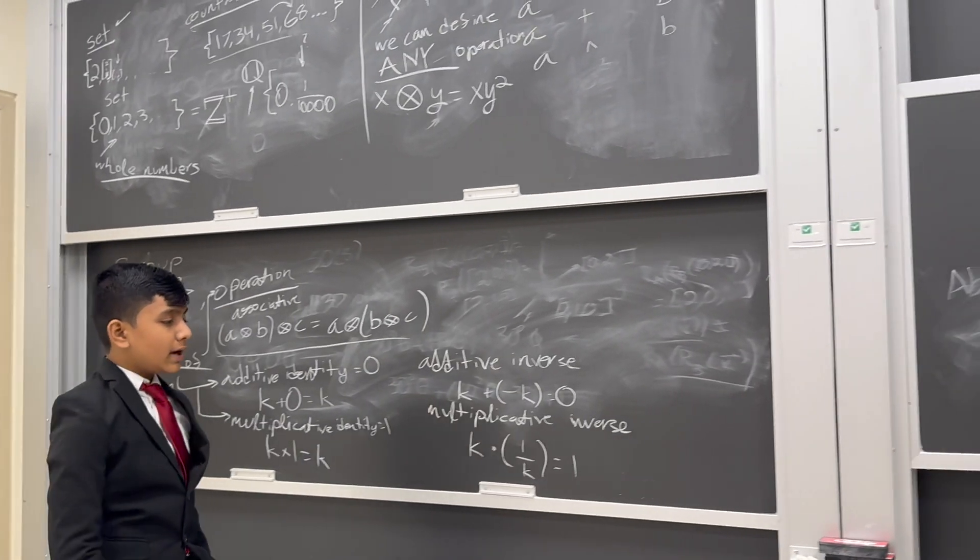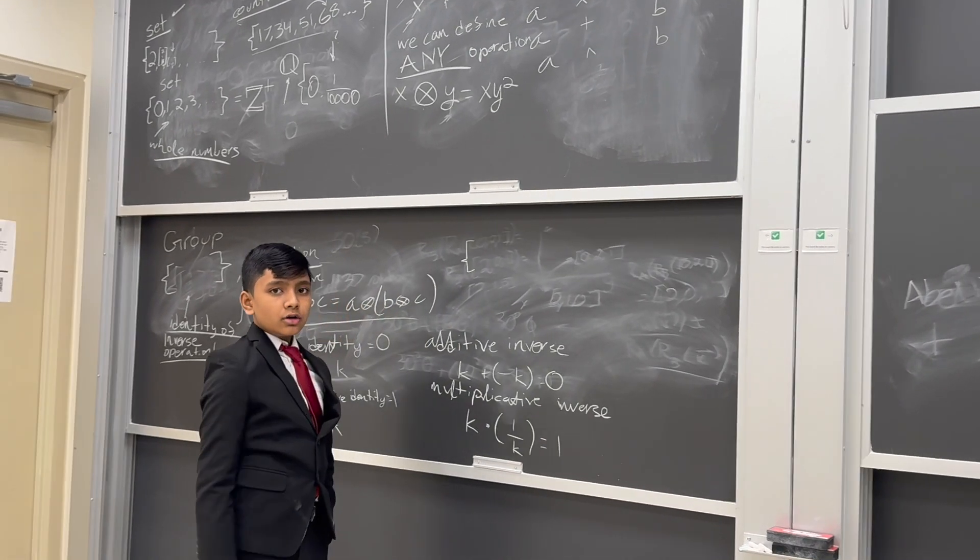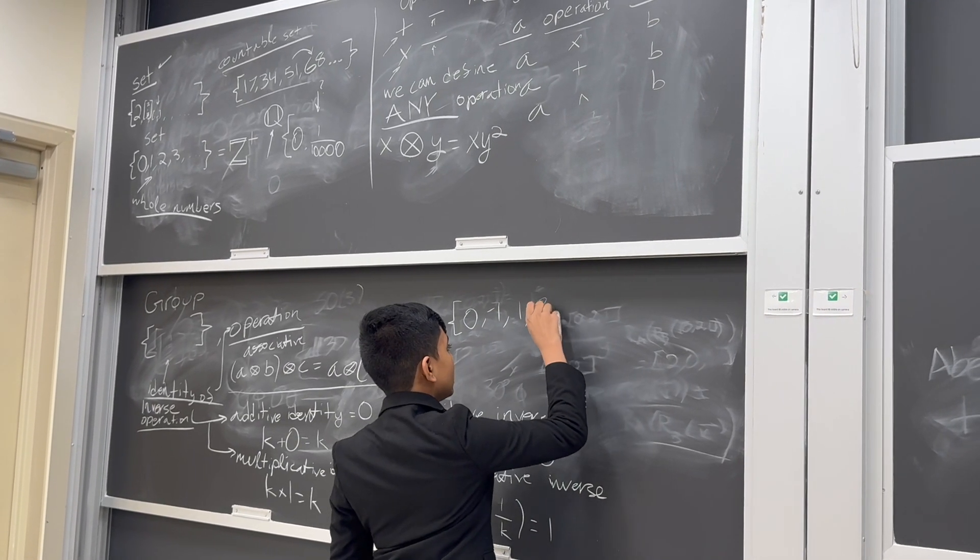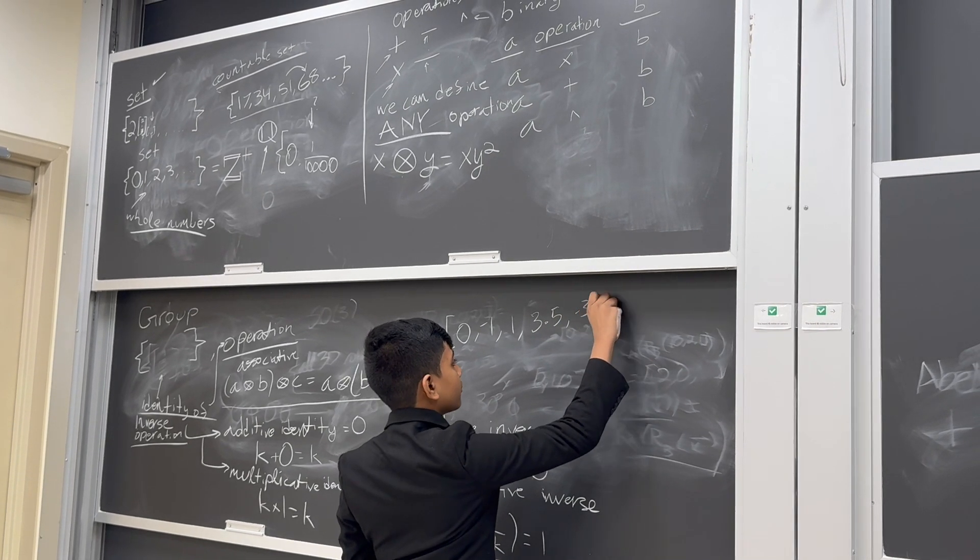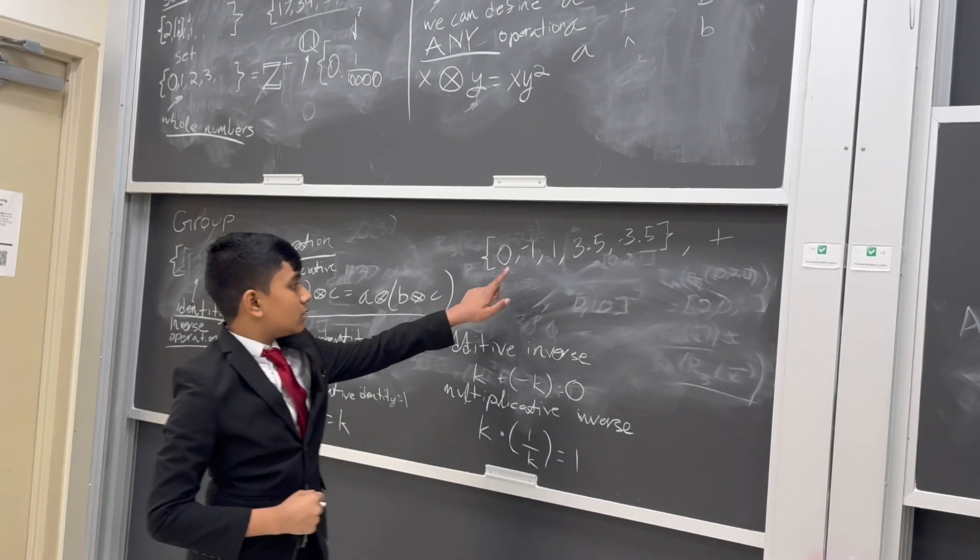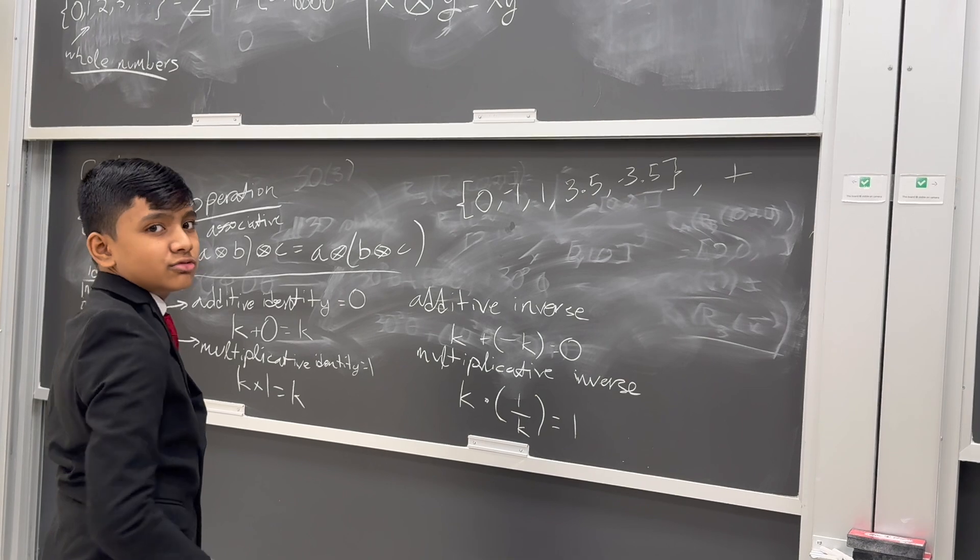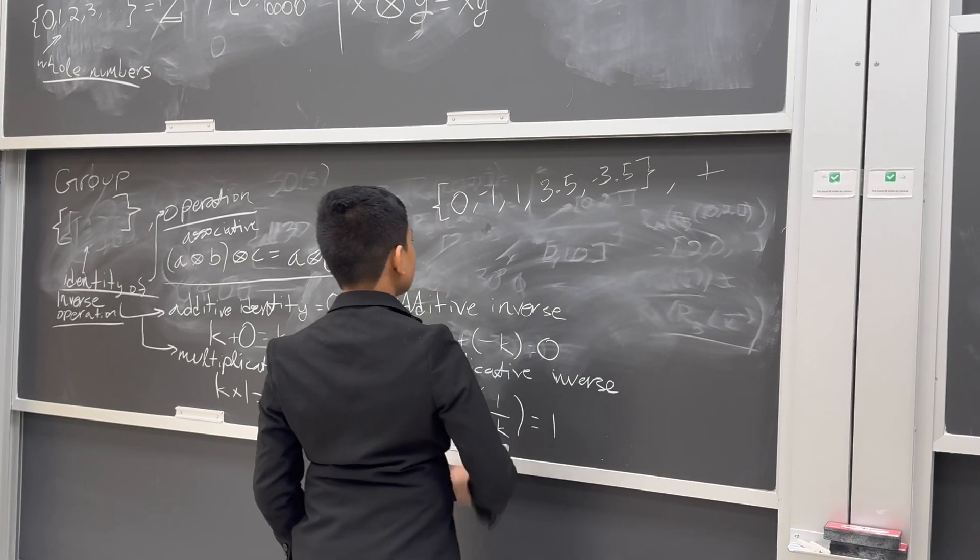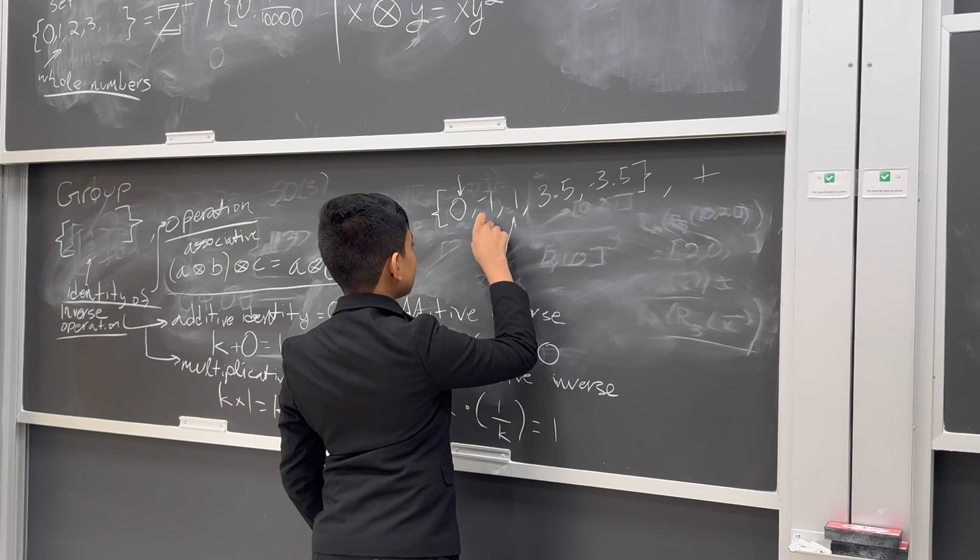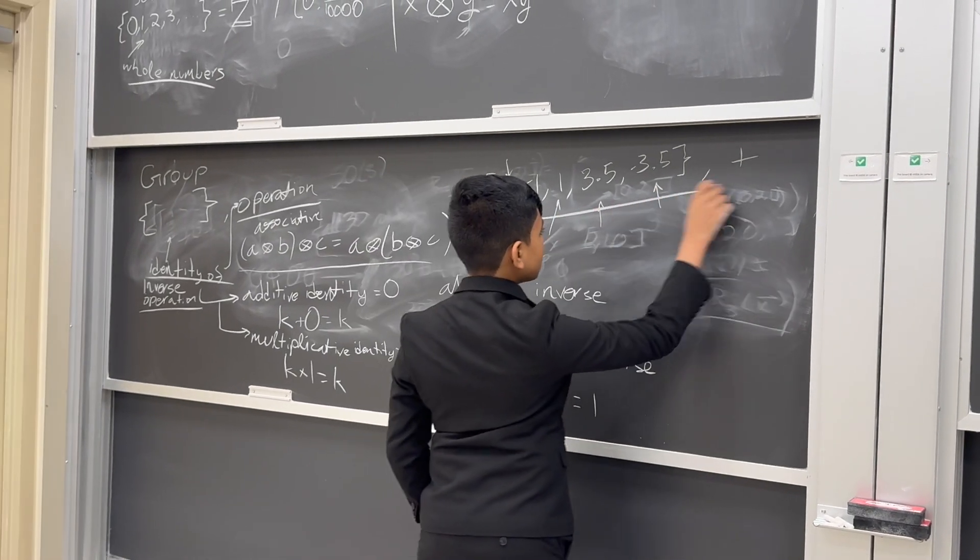So, let me give you an example of a group. So, an example of a group could be 0, negative 1, 1, 3.5, minus 3.5, under addition. Now, why might this be a group? Well, first of all, addition is associative, as I'm sure you all know. But also, the identity is here. The additive identity being 0. And every element in the set has its additive inverse involved as well. So, that makes this a group.